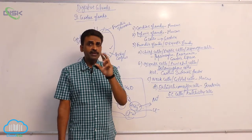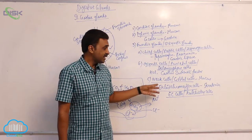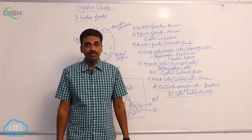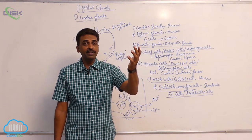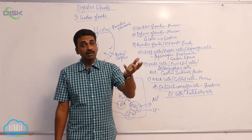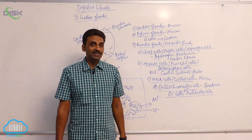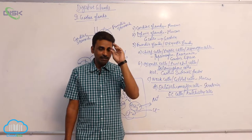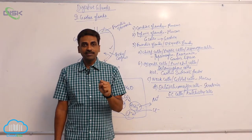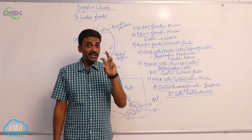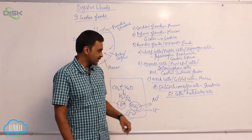About 90% of the serotonin is released inside the gut by EC cells. After entering the blood, some of that serotonin is taken up by blood platelets, where it is useful for vasoconstriction.